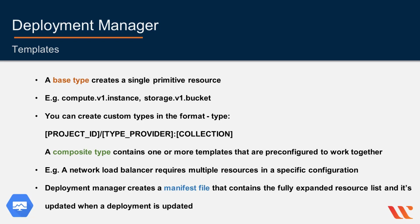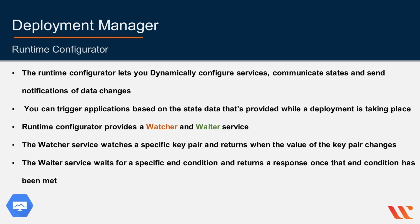A manifest is a read-only object that contains the original configuration you provided, including any imported templates, and also contains the fully expanded resource list created by the Deployment Manager. When a deployment is updated, the Deployment Manager generates a new manifest file. Because it's read-only, it cannot be edited.